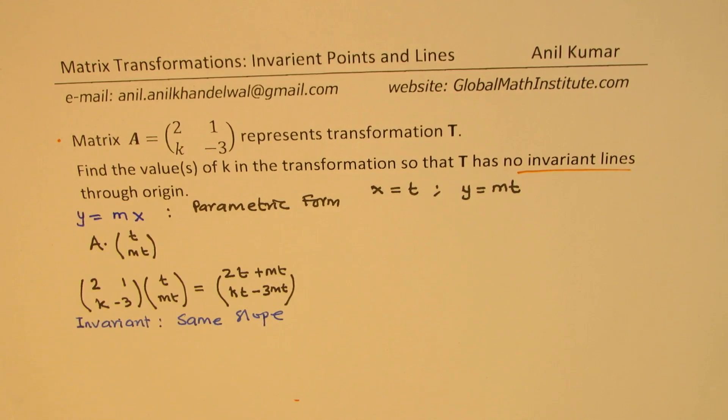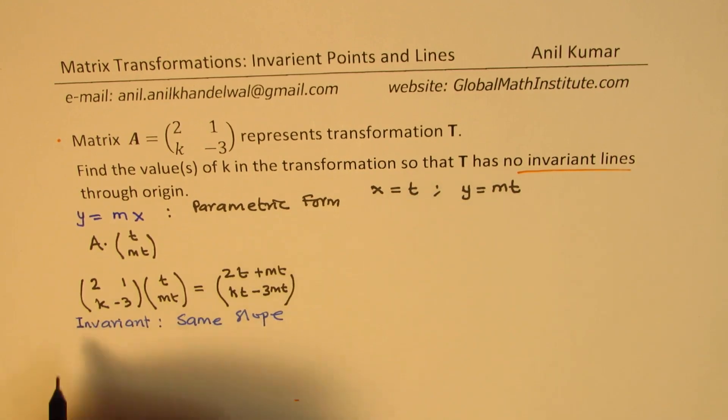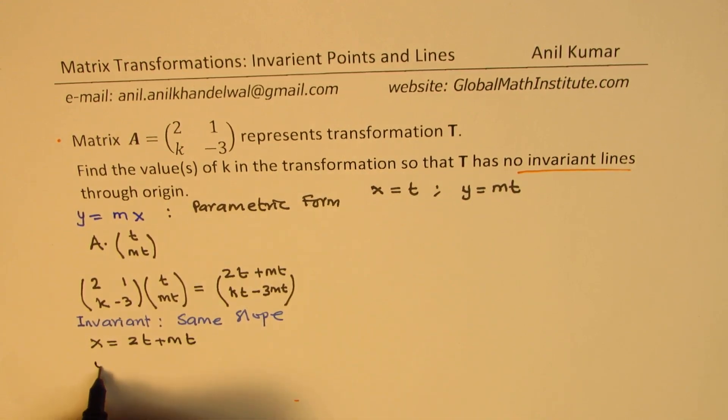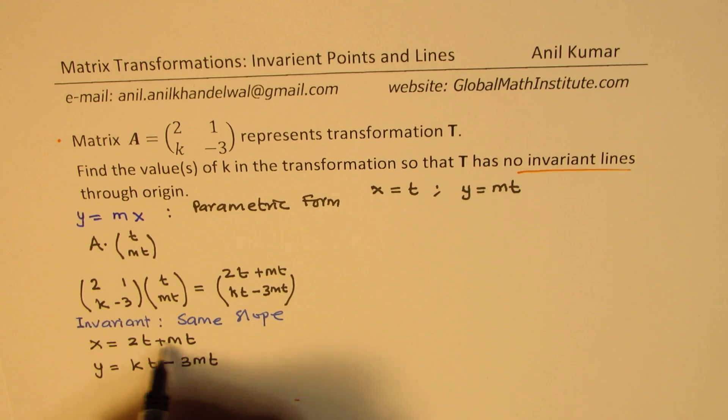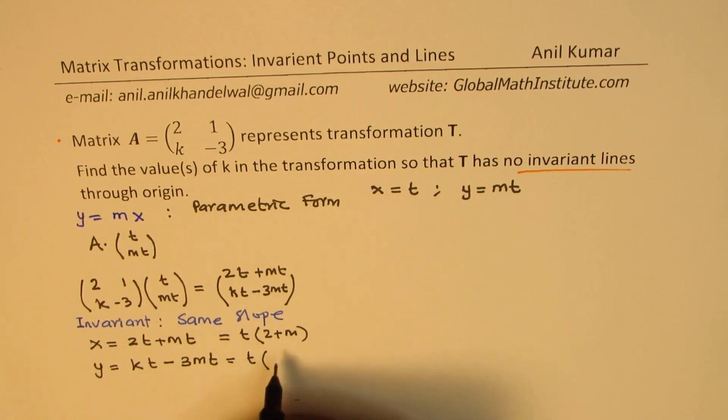So let's equate this to the slope m. So before that, from these two, we get two different equations, which is x equals 2t plus mt, and y equals kt minus 3mt. Now from the second equation, we can write x as t common, we get 2 plus m. Here we can take t common, and we get k minus 3m.